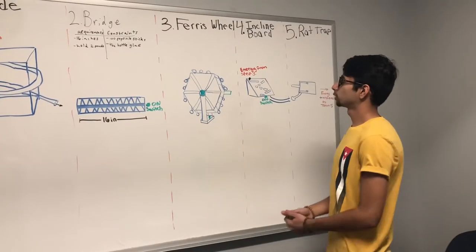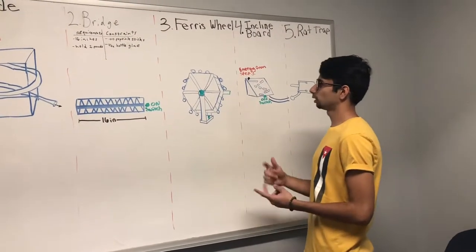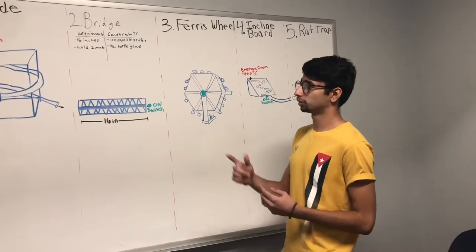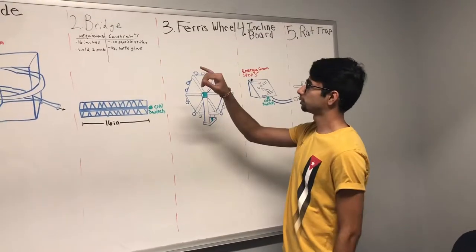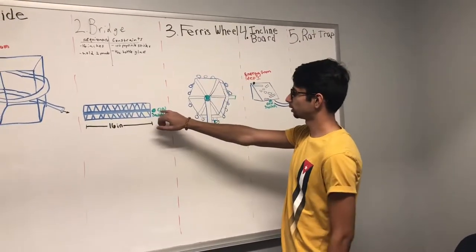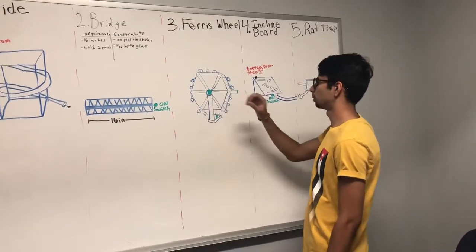On to Step 3, we have our Ferris wheel, which contains our mechanical component, electrical component, as well as our theme of acoustics. From Step 2, the bridge, a ball is going to come and hit this switch, which will power the motor, which is our electrical component.